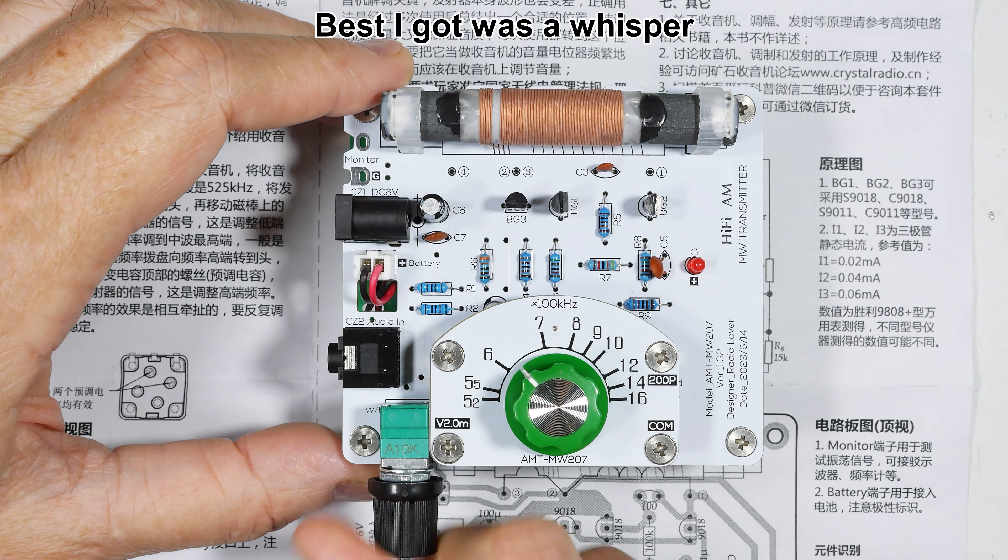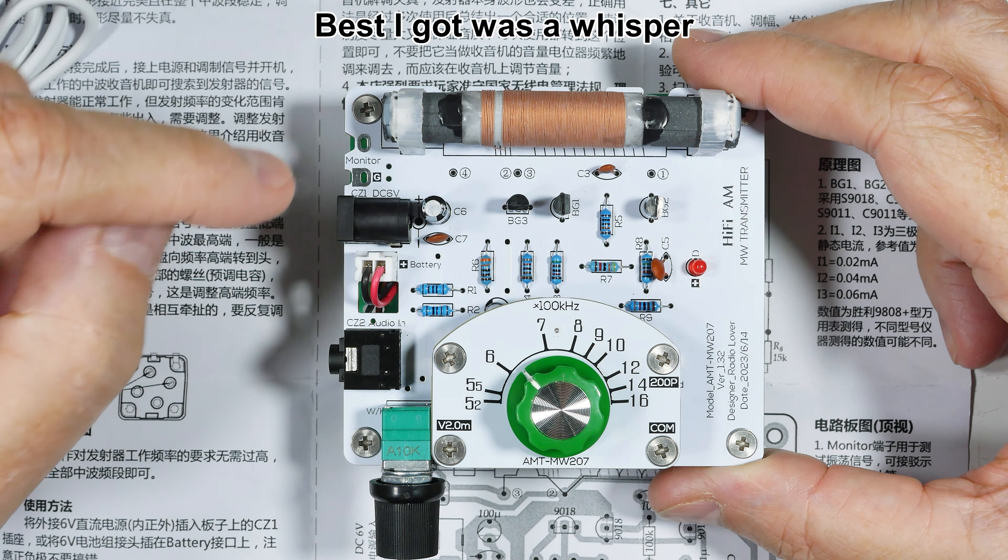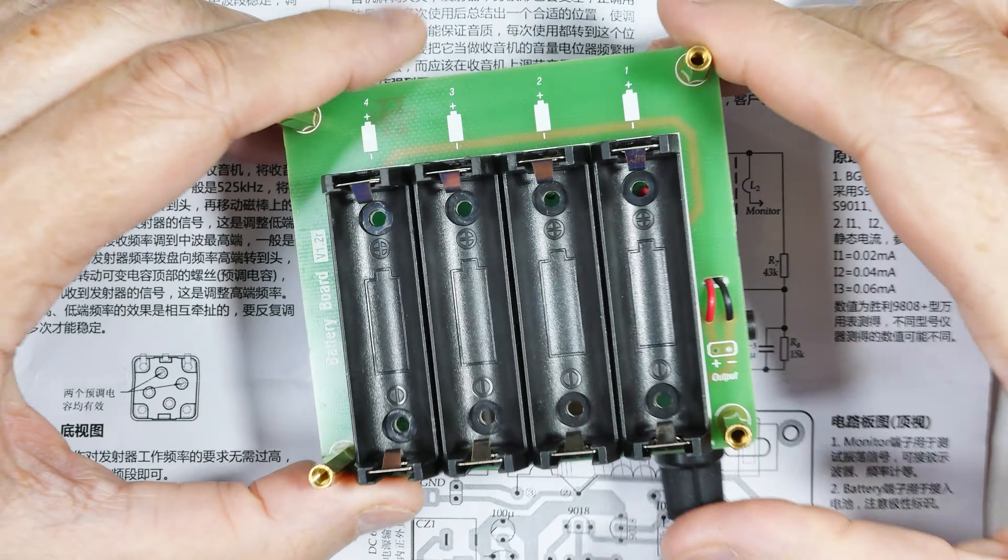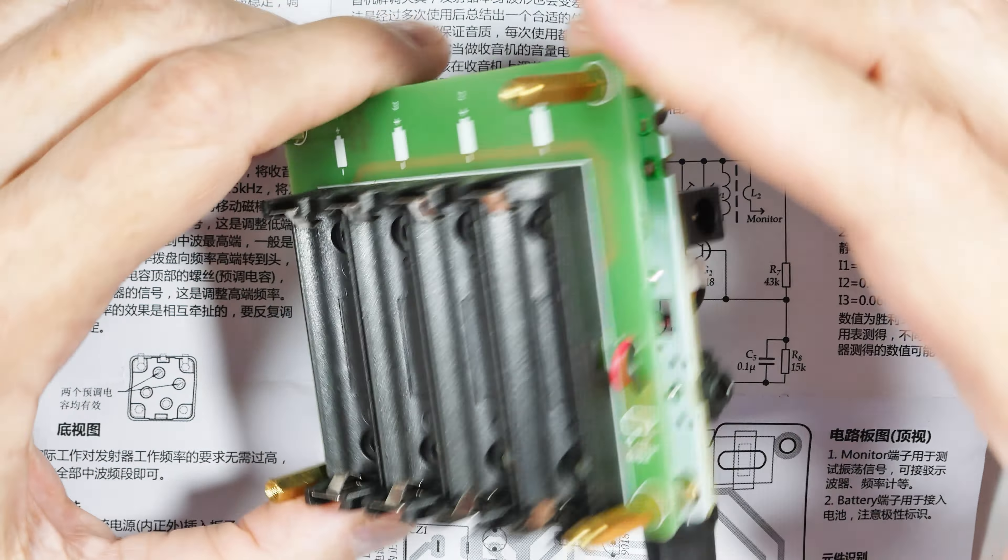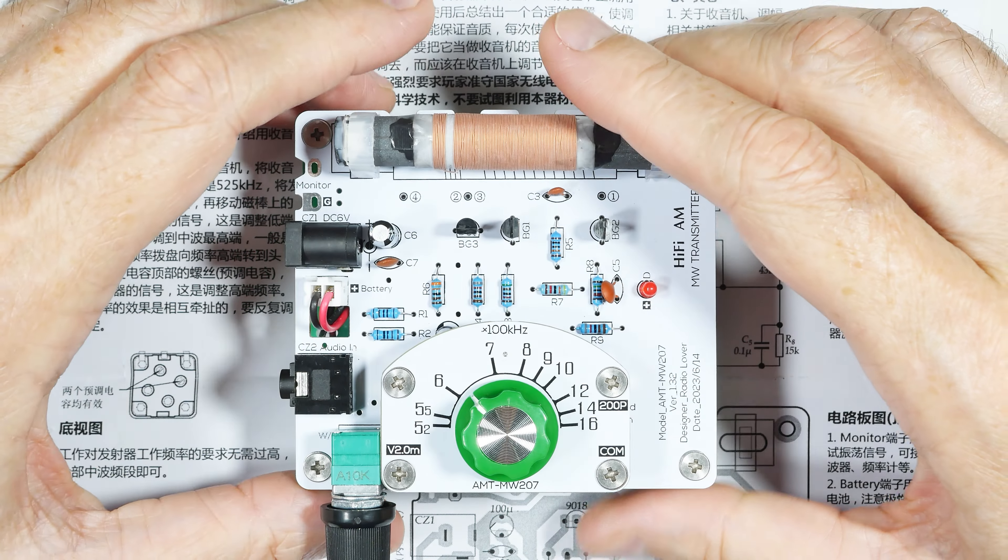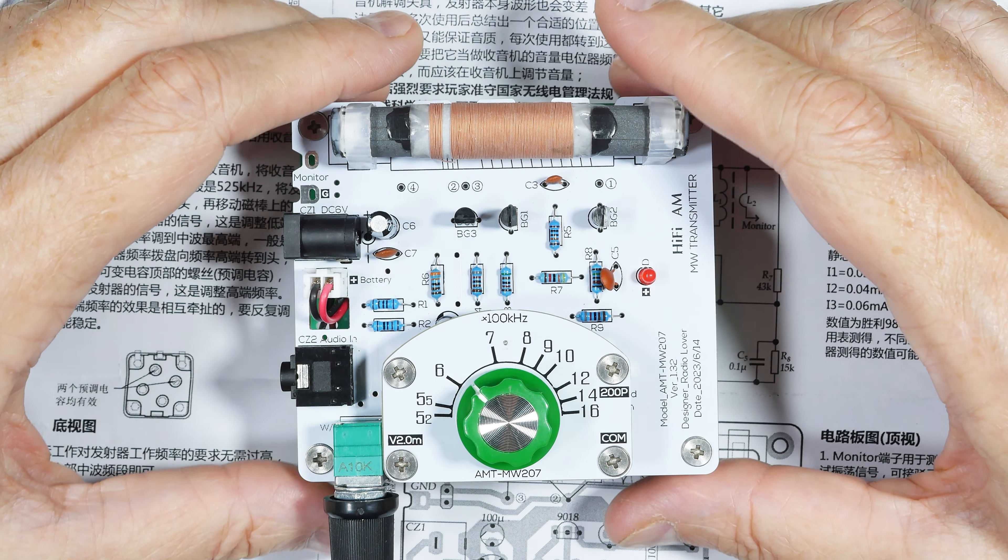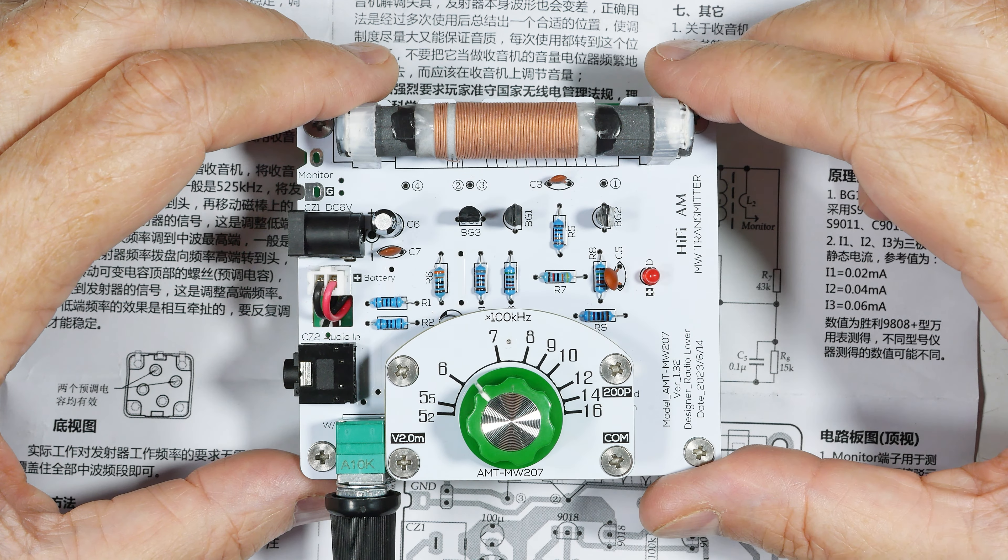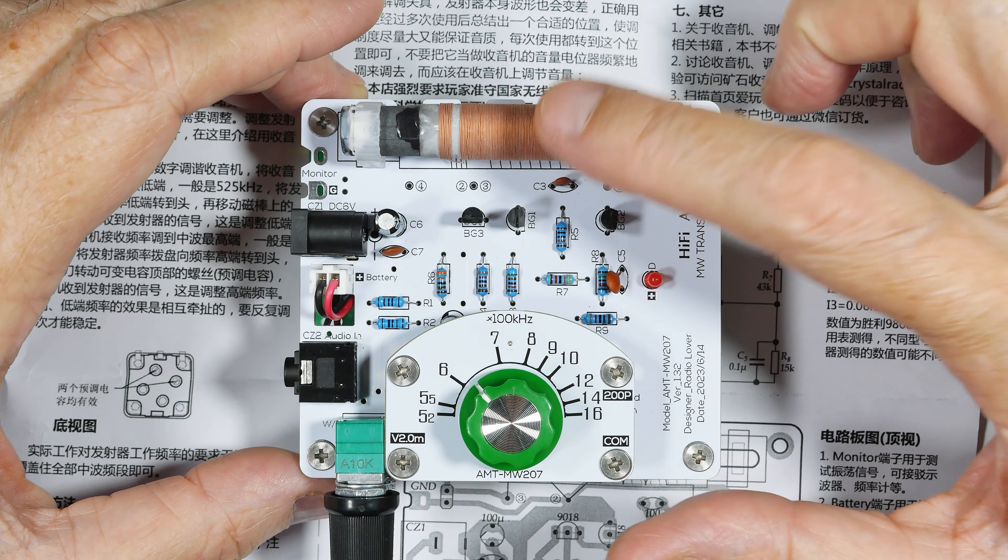It has two power inputs - six volts here and on the bottom side it came with a battery pack. There's not a lot to it, it's got your standard ferrite antenna and all that other stuff.